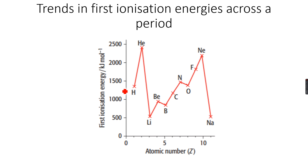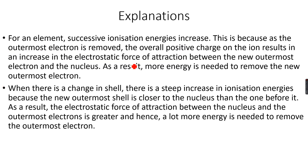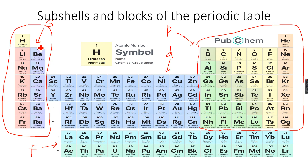Now we have done trends in first ionization energies for an element and down a group. Let's now do trends in first ionization energies across a period. You can see that this shows the first and second periods of the periodic table. Let's go back to our periodic table.